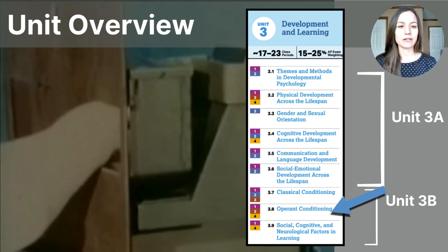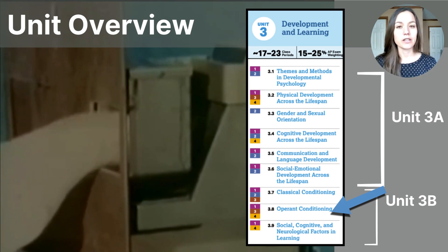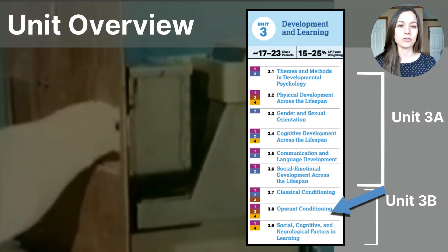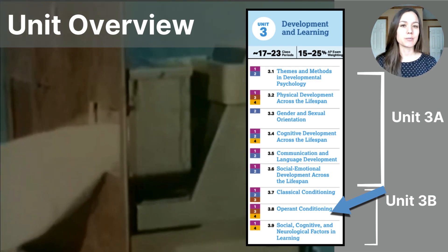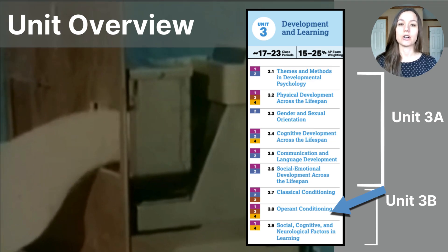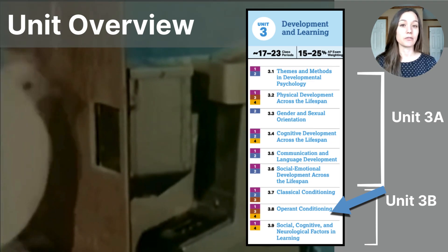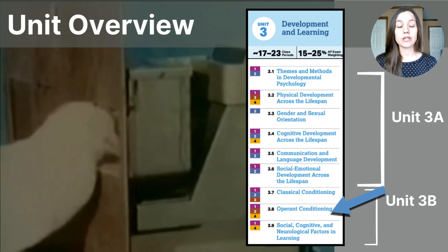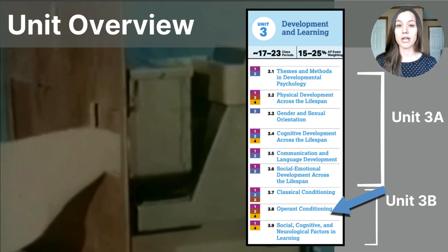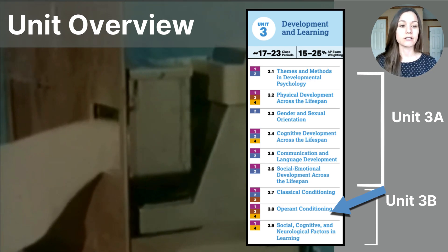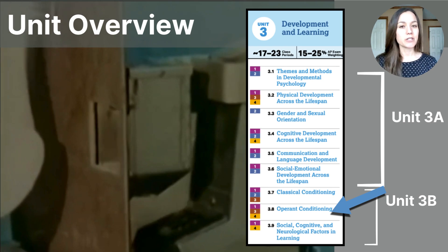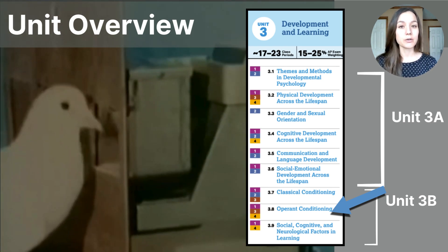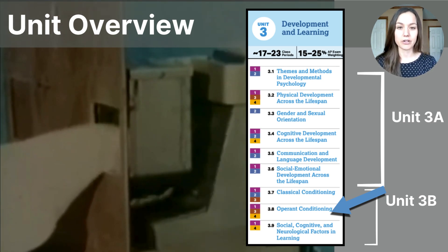As you can see on our unit outline, we are in the section titled 3B, the second section of this unit, which focuses on the realm of learning. In our video today, we're going to go over topic 3.8, which is operant conditioning, specifically the consequences of operant conditioning that shape our behavior.